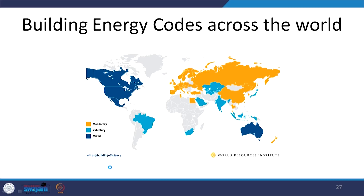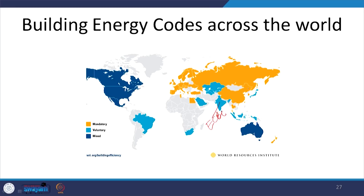Looking at the global map, energy codes are being implemented and developed for different parts of the world. For example, ECBC is the energy code for India. For the rest of the world there are also different energy codes being developed — some are mandated, some are in a voluntary stage, and some are in mixed stages of implementation, partly mandatory and partly voluntary. In India for example, GRIHA is mandated for public buildings. The same scenario applies to energy codes.